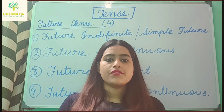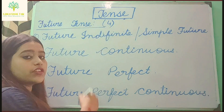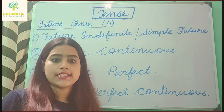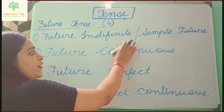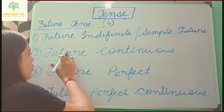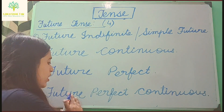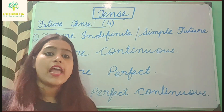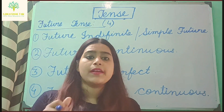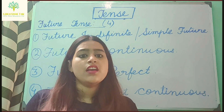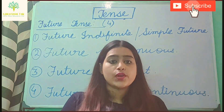Future tense is also divided into four parts. First is future indefinite or simple future. Second is future continuous. Third is future perfect. And fourth is future perfect continuous. The time changes from present to past to future, but otherwise everything is the same. So there are twelve tenses altogether.